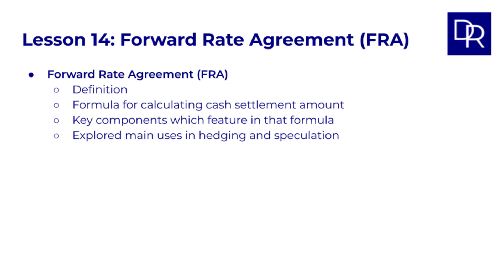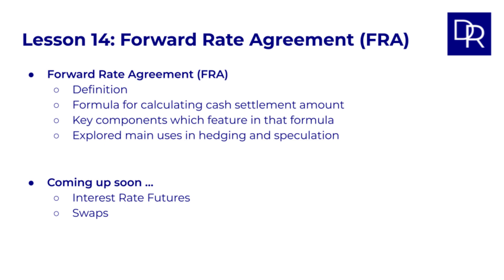So in this lesson we've defined forward rate agreements, learned the formula for calculating their cash settlement on the settlement date, broken down the key components which feature in that formula, and explored their main uses in hedging and speculation. Soon we'll dive into two other important interest rate derivatives: interest rate futures and swaps. If you found this lesson helpful, please give it a like and consider subscribing to the channel. If you have any questions or comments, please leave them below. Thanks for watching and I'll see you in the next video.